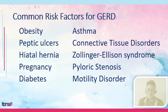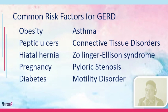We also have Zollinger-Ellison syndrome, which is characterized by the presence of acid-producing tumors in the stomach. Because of the excess acid, the tendency is for the acid to reflux. Then we also have pyloric stenosis — once there is narrowing of the pyloric sphincter, the contents of the stomach stay in the stomach because they cannot transit down to the small intestine, causing the food and acid to backflow towards the esophagus, leading to GERD.